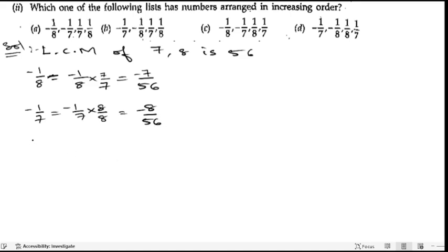Next is 1/7. So 1/7 times 8/8. 8 ones are 8, 8 sevens are 56.